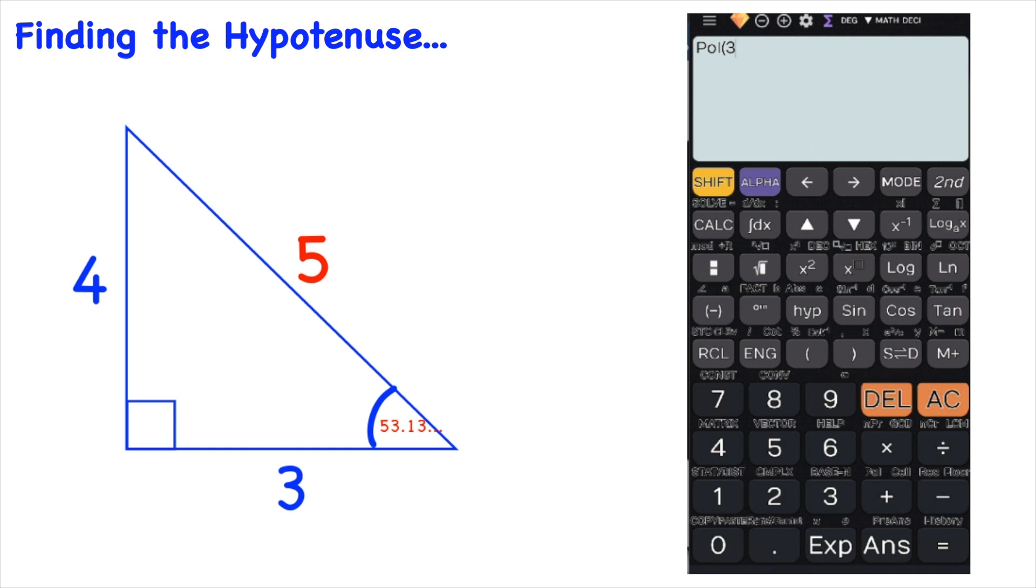What would happen if we switched the numbers around so we had 4 and 3. Let's try that. So I'm just going to delete that and I put 4 first, separated by the comma, shift, close bracket and then put 3 as the height. You still get the hypotenuse as 5 but notice that the angle has changed now. That's because the height of the triangle has gone slightly lower so the angle will be smaller. So you need to be careful of the order in which you input the numbers. So always put the base length in first then put in the height.